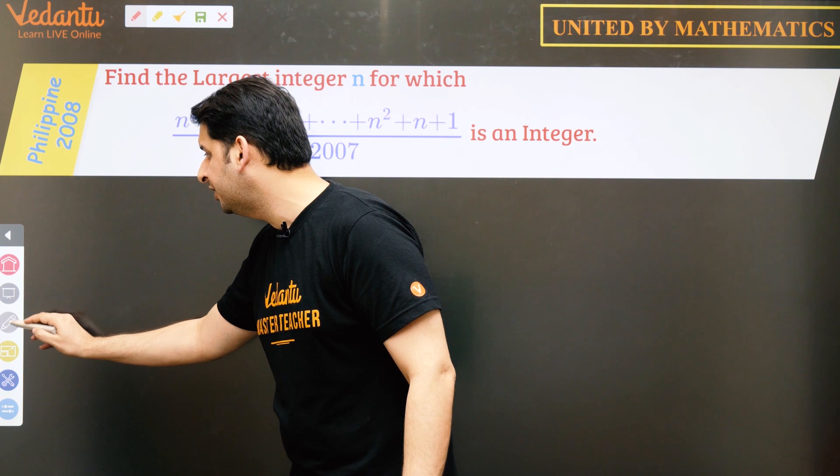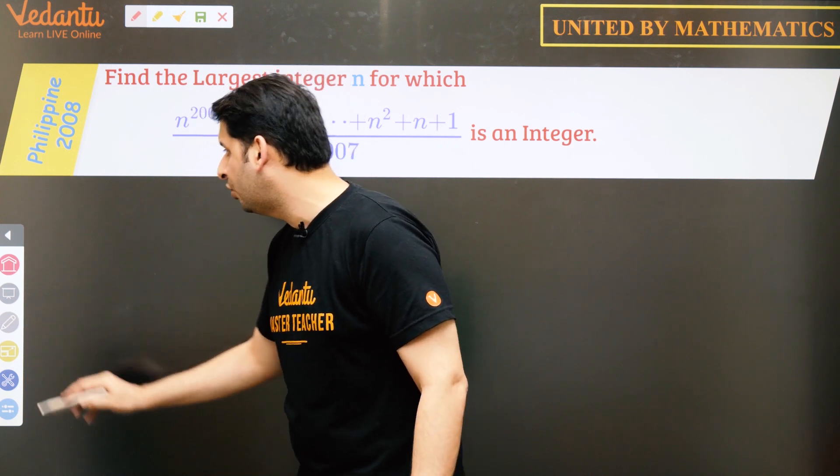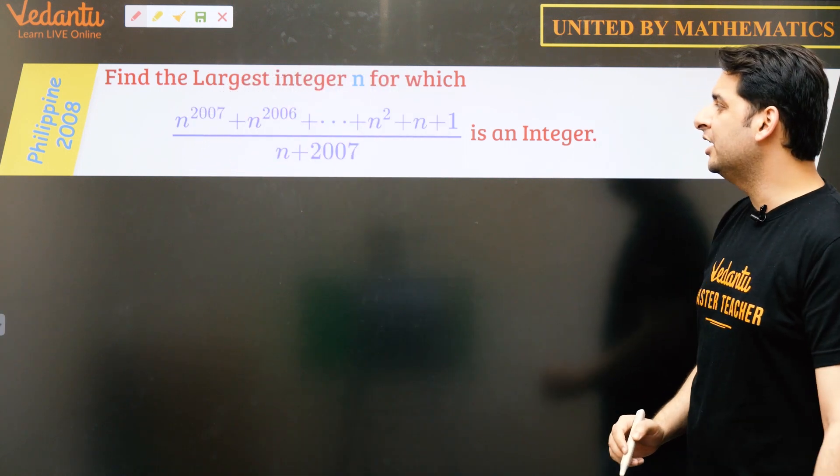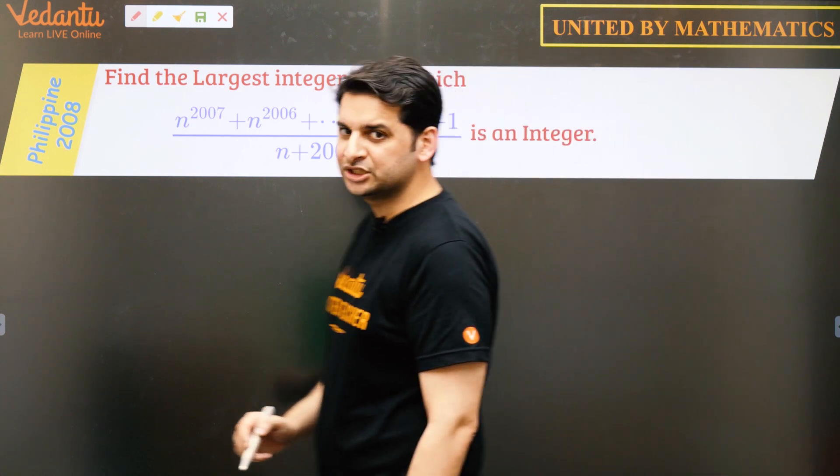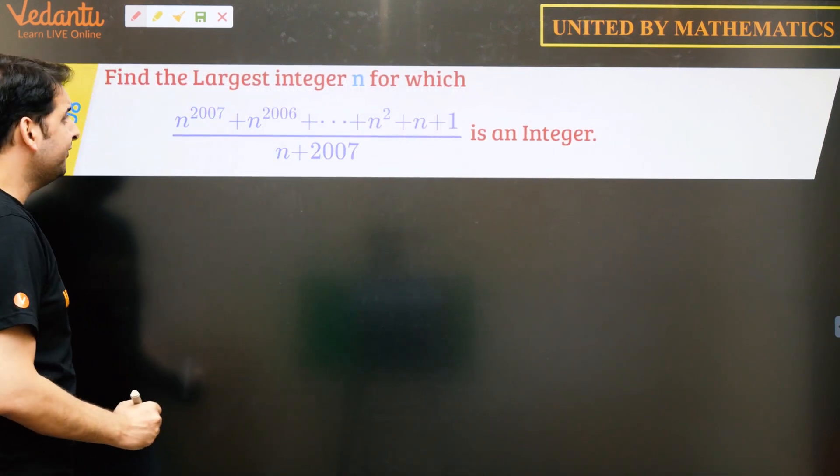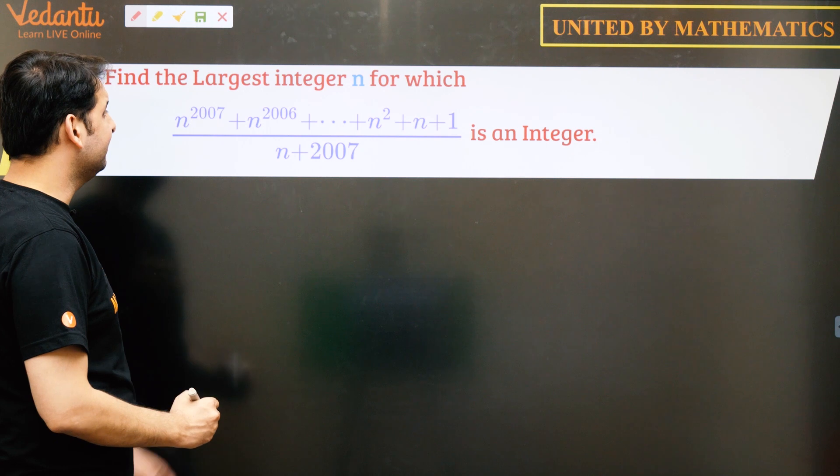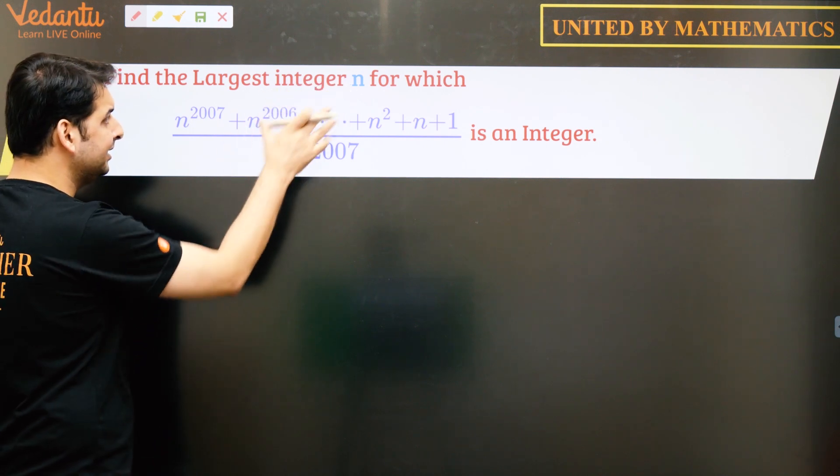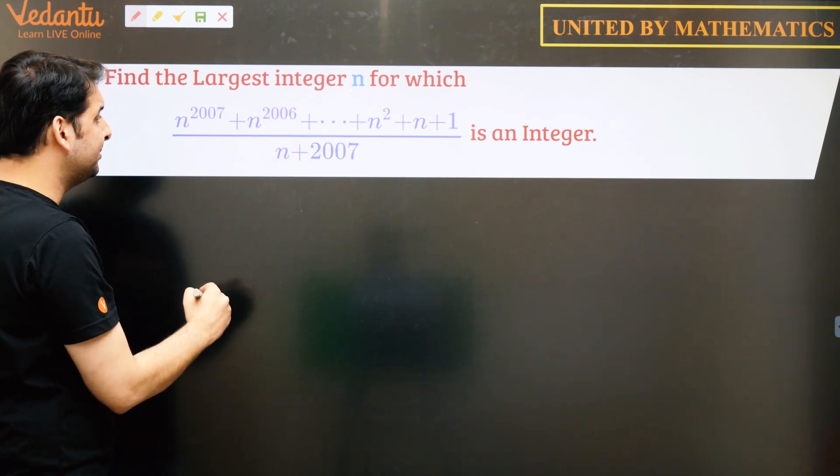So let us try to do this question. So what we do is to find the largest n, we divide the polynomial which is in the numerator by 2007.